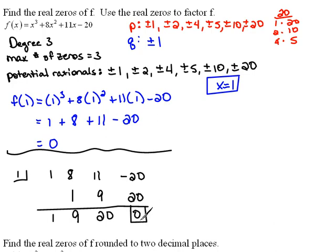This is our remainder position. So this tells us that we have left, since we started off with x³, then our new function will be 1x² plus 9x plus 20. Now that's just a quadratic that we could hopefully be able to factor. We're going to finish this out in the next video. Thank you.